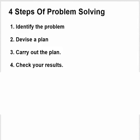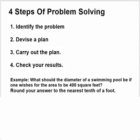We're going to try out these four steps on the following problem: What should the diameter of a swimming pool be if one wishes for the area to be 400 square feet? Round your answer to the nearest tenth of a foot. I've given this problem on a previous final, and a lot of students could not do it.